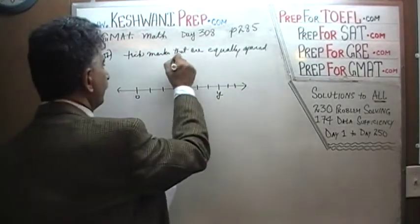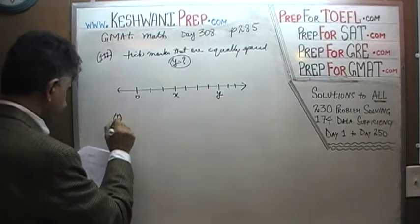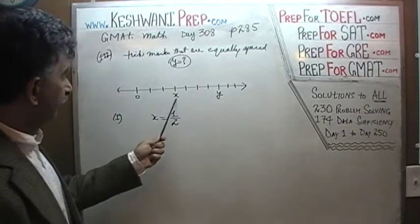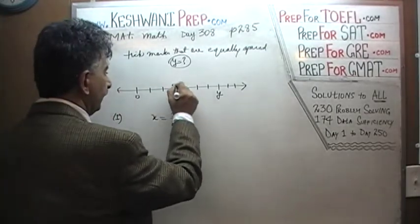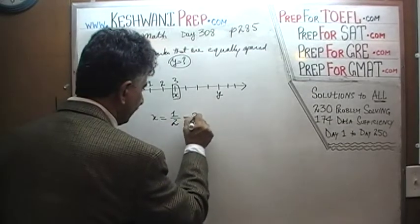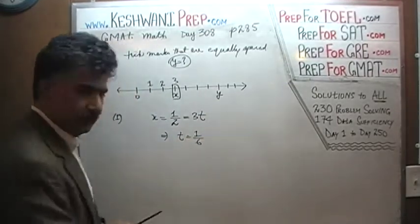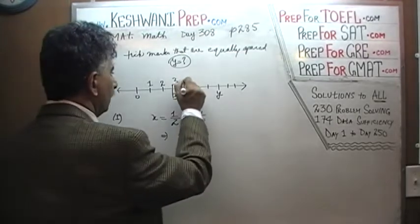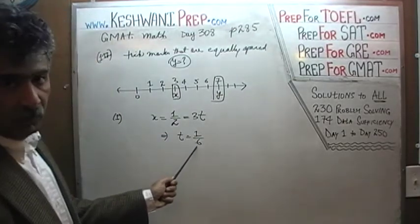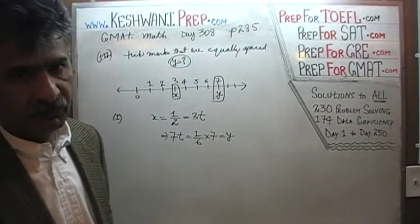The question is: how much is y? In the first statement, they tell us that x equals one-half. If x equals one-half, then you can clearly see that x is located at the third tick mark. This tells us that three ticks equal one-half, and therefore one tick mark must equal one-sixth. We count again — y is located at the seventh tick mark. So if one tick equals one-sixth, then seven ticks must equal seven times that amount, which is y. The first statement does the job quite nicely.